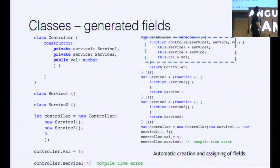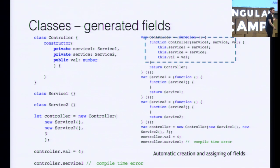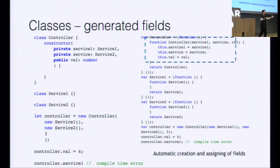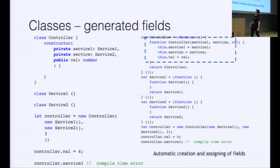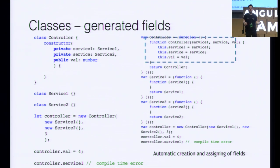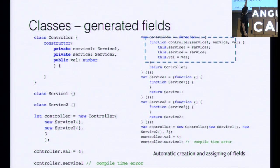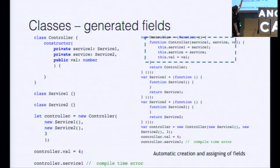This is probably one of my favorite things, because I'm a lazy developer. Here we see accessor keywords like private and public used inside the constructor parameters. The first time I saw that, I was convinced it must be an error — since when do we write private inside our parameters? But this is very neat because it creates member fields for us automatically. Looking to the right, service one, service, and value are all created for us just by writing the accessor name in the constructor.